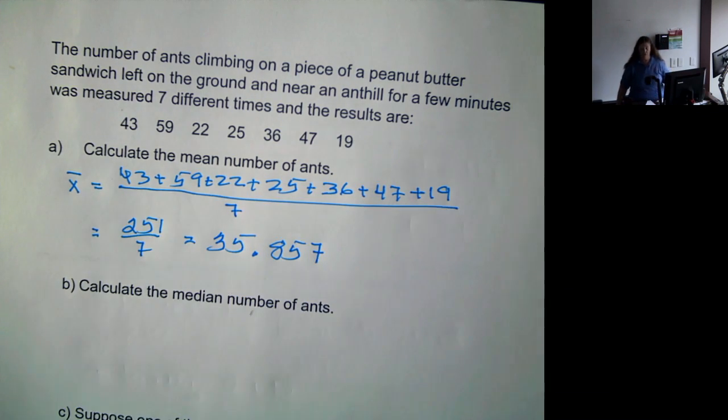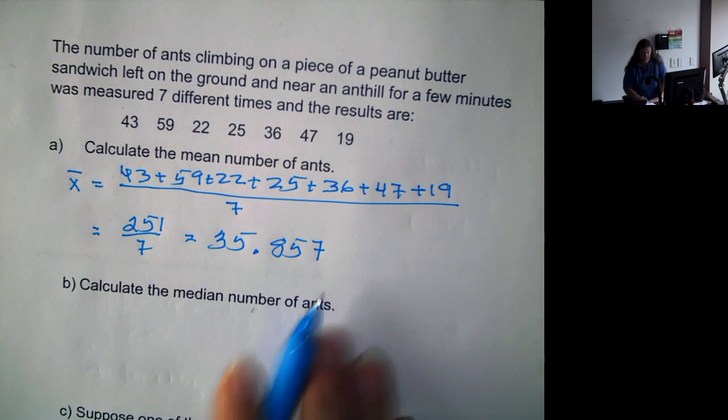I know since we're counting ants, we can't have a partial ant. However, it is okay for the average to be a decimal value. We don't round to a whole number for any of these values if it's a decimal. And we'll take the decimal out to two to three decimal places.